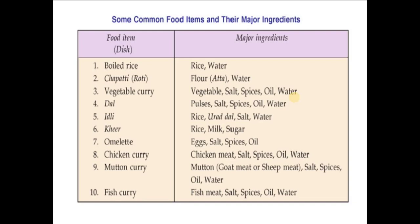Some common food items and their major ingredients are listed in this table. Boiled rice requires rice and water. Chapati requires flour and water. Vegetable curry requires vegetables, salt, spices, oil, and water. Dal requires pulses, salt, spices, oil, and water. Omelette requires eggs, salt, spices, and oil. Chicken curry requires chicken meat, salt, spices, and water. Mutton curry includes mutton, salt, spices, oil, and water. Fish curry includes fish meat, salt, spices, and water.